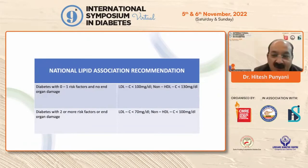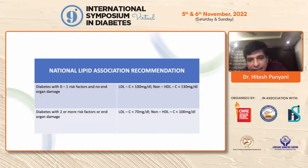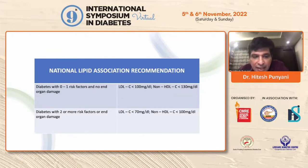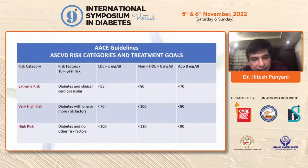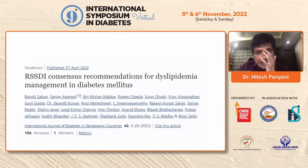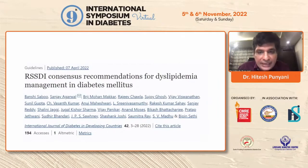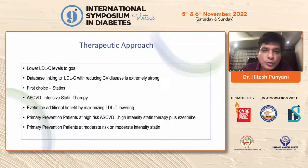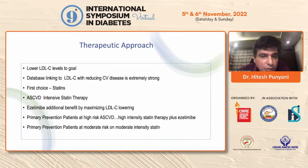The National Lipid Association recommends non-HDL targets as well — for high-risk patients, non-HDL must be less than 100 mg/dL and LDL less than 70 mg/dL; for lower risk, LDL less than 100 and non-HDL less than 130. The ACE guidelines categorize into extreme, very high, and high risk, also incorporating ApoB targets of 70, 80, and 90 mg/dL respectively. The RSSDI guidelines also mention bempedoic acid and saroglitazar, particularly for patients with hypertriglyceridemia, and bempedoic acid for those who cannot tolerate statins or need LDL brought below 55 mg/dL.